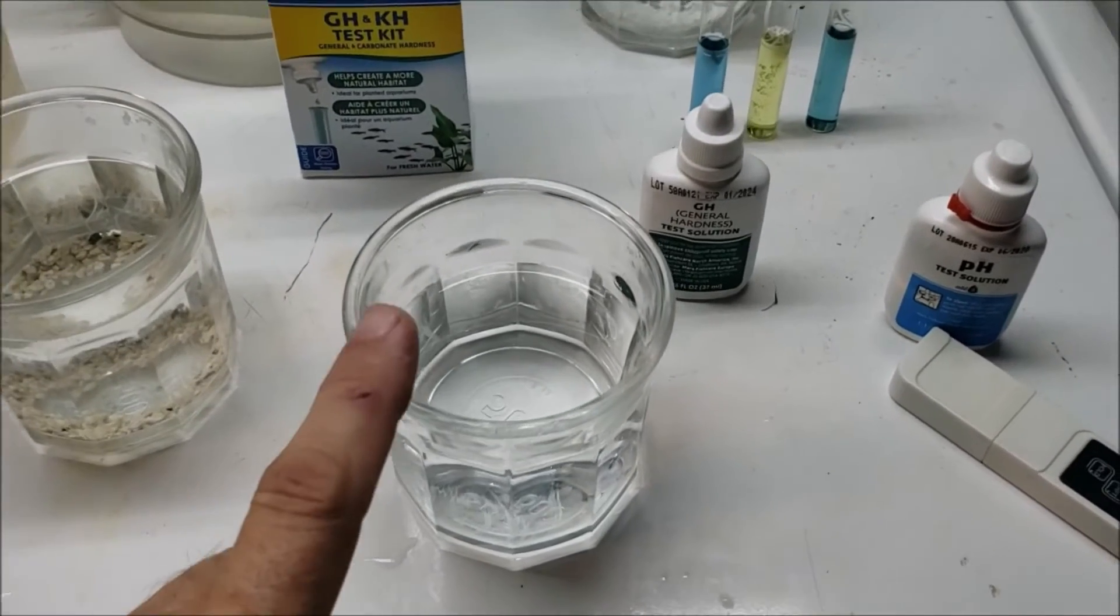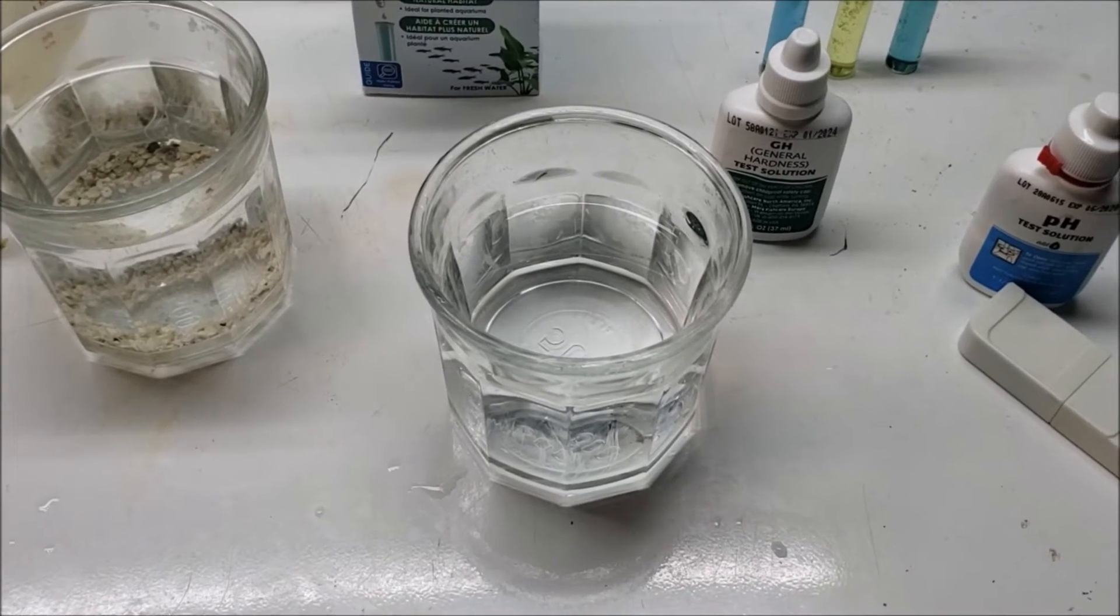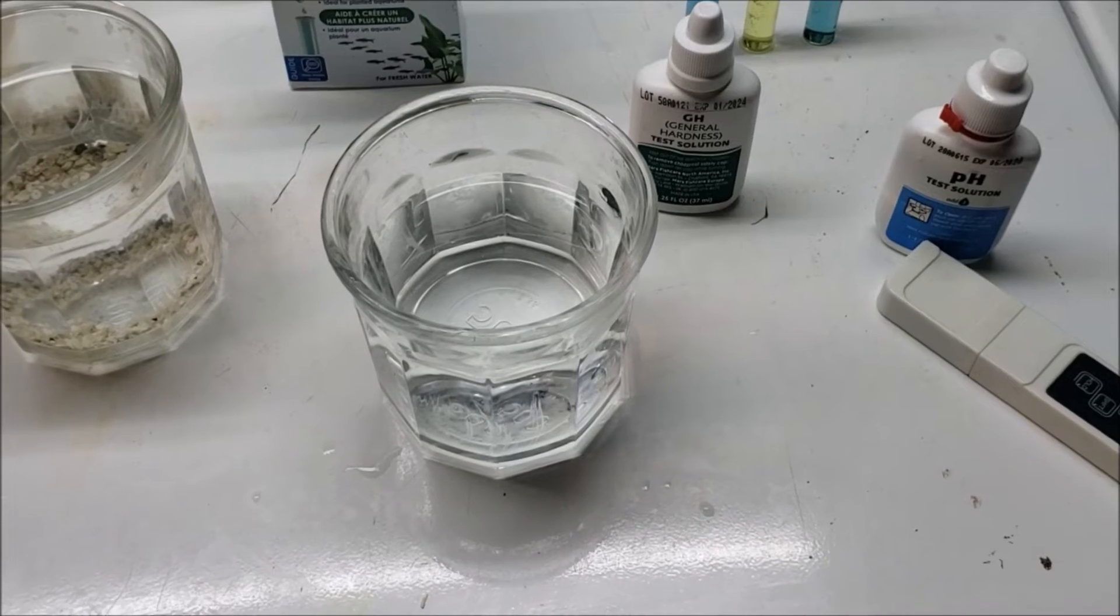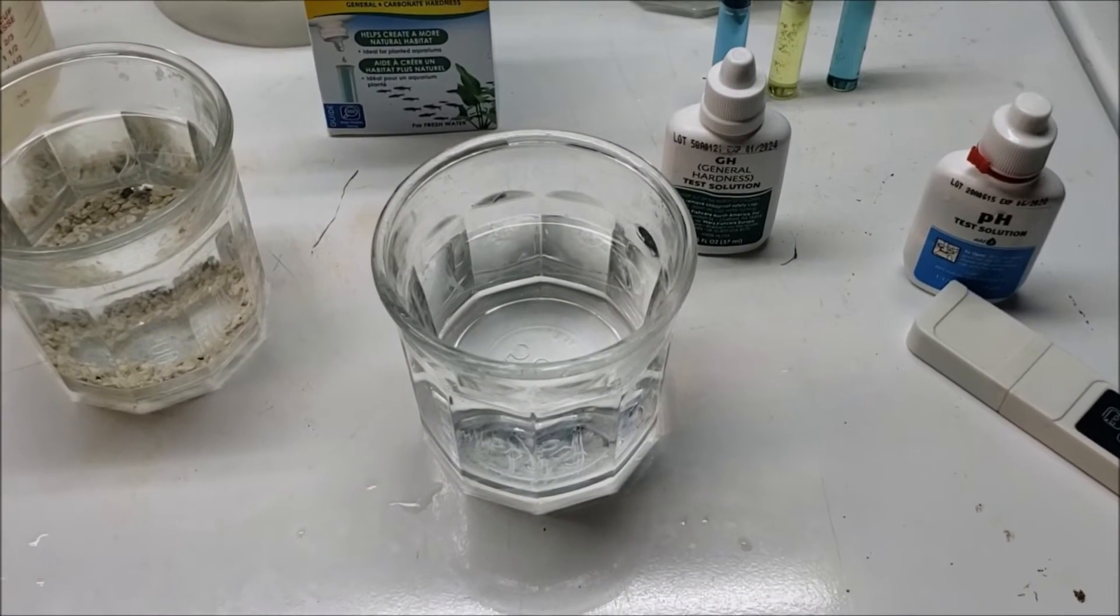We're going to take some distilled water and do a TDS check - should be zero or pretty close to it. I have used this glass for other water and I have recently been using the TDS meter in other water, so if we get one or two parts per million I'm not too worried about that. But that is distilled water I just poured out of the jug.